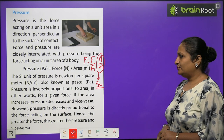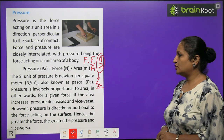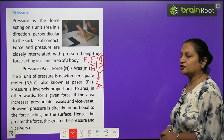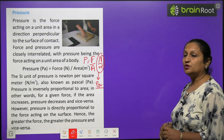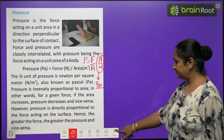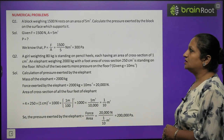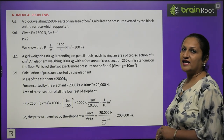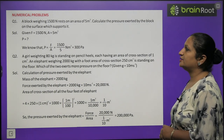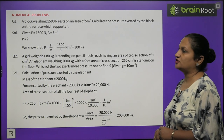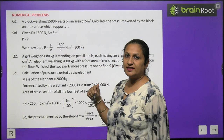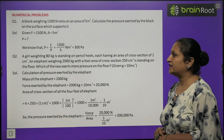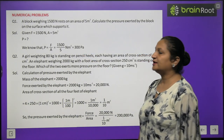Numerical example 1: A block weighing 1500 Newton rests on an area of 5 meter square. Calculate pressure exerted by the block. Using the formula Pressure = Force / Area = 1500 / 5 = 300 Pascal.